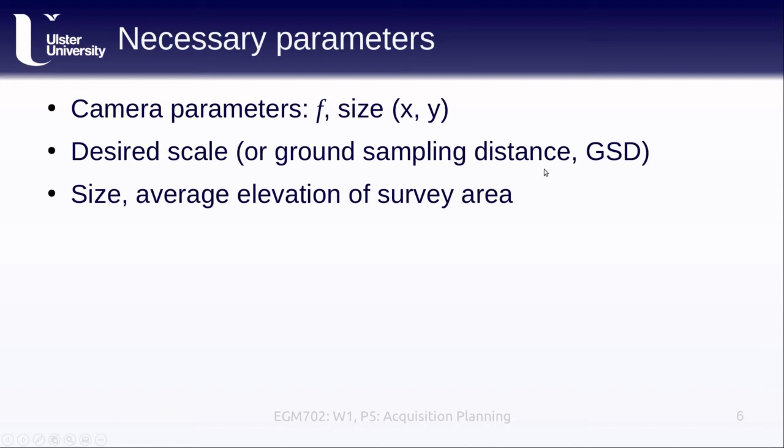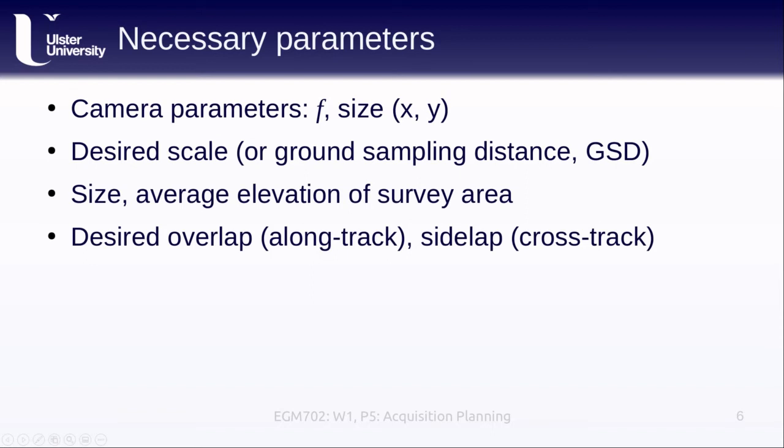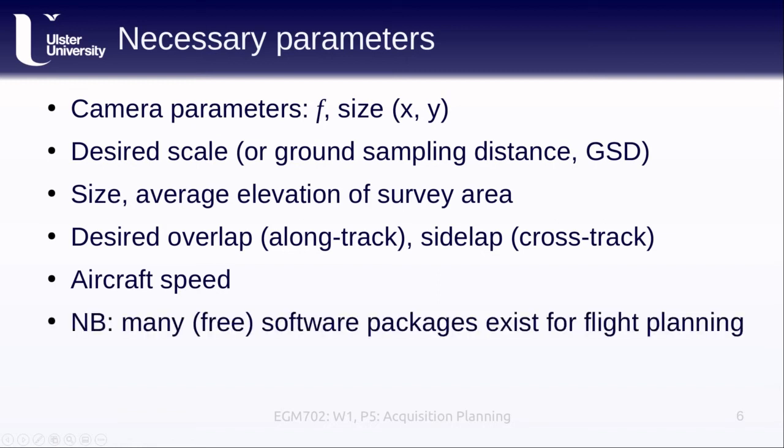We also need to know the size and the average elevation of our survey area. We need to figure out how much overlap we want. Typically, this is around 60% for along track and about 30% for cross-track overlap. But depending on the goal of our survey, we might have different values in mind. We also need to know the aircraft speed. And I should note that there are a lot of different software packages that you can go find to actually do the flight planning. You usually don't have to do all of this yourself. We're going to run through an example here just so you get an idea of the different considerations that go into it. But when you do this on the job or in your own research, this is not something that you're going to need to do regularly.